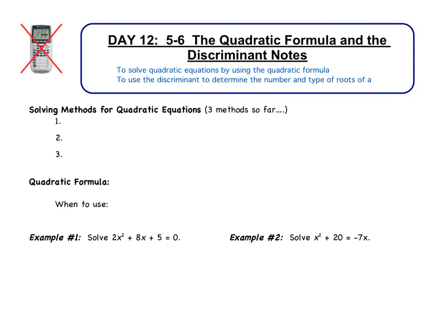Welcome to day 12 for chapter 5, which is section 6, the quadratic formula and the discriminant. You will notice for today's video you need no calculator. There are two objectives. First, we are going to solve quadratic equations using the quadratic formula — I'm sure you learned this in algebra 1 and possibly went over it in geometry. Then, something new: we're going to use the discriminant to determine the number and type of roots of an equation.